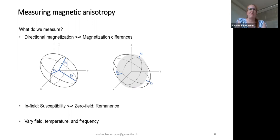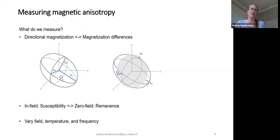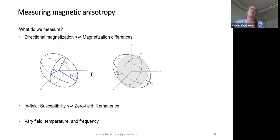Having so many methods available makes it complicated, because we have to decide what to measure. One consideration is whether to measure directional magnetizations or magnetization differences. Measuring directional magnetizations gives us the full tensor, while measuring magnetization differences gives only the deviatoric tensor. We also need to decide whether we're measuring susceptibility in-field or remanence. We also have the option to vary the field, measurement temperature, or frequency — giving us a lot of information, but also requiring careful decisions.